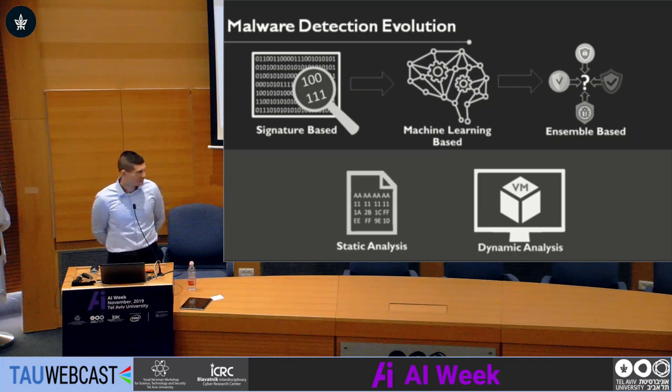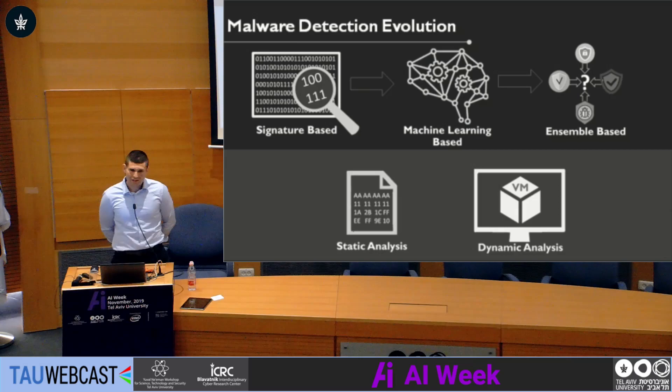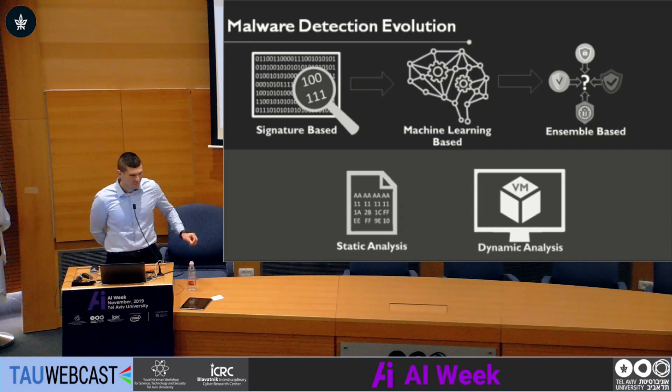Lastly, we have the ensemble-based method encountered in recent years. The general idea is: instead of fighting them, join them. We use all detectors we have, aggregate the results, and based on the aggregated result, we classify the file. The main disadvantage of ensemble-based methods is the fact that they are very expensive.